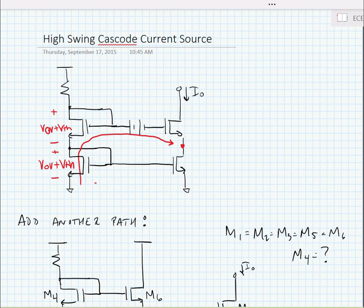And we know what we'd like to have at this point is just a Vov. We know that this transistor also has a Vov plus a Vth, so if we could somehow put a voltage source in series here that was equal to one Vth...